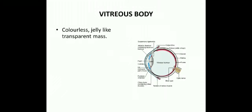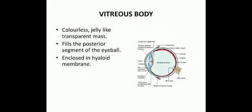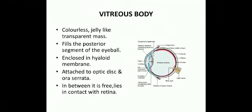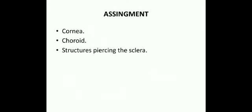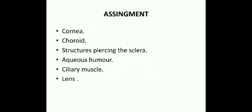The vitreous body is a colorless, jelly-like, transparent mass that fills the posterior segment of the eyeball. It is enclosed in the hyaloid membrane, attached to the optic disc and the ora serrata. Posteriorly it attaches at the optic disc and anteriorly at the ora serrata; in between it lies free and in contact with the retina. Assignment topics include short notes on: cornea, choroid, structures piercing the sclera, aqueous humor, ciliary muscle, the lens, and retinal detachment.